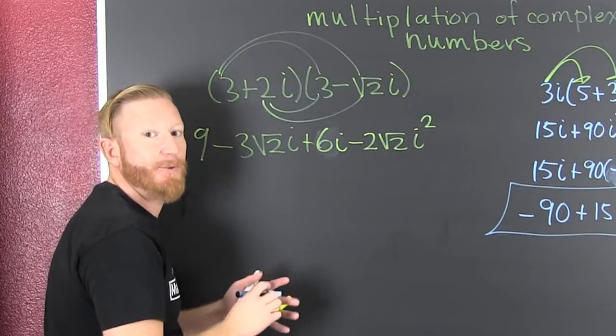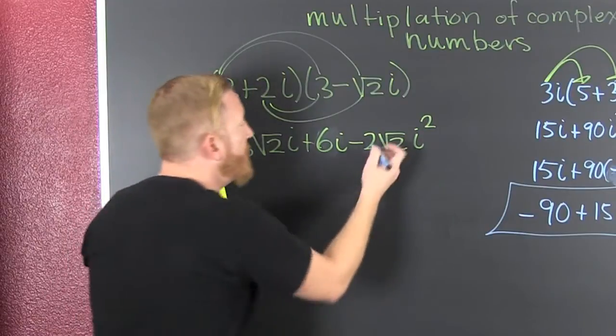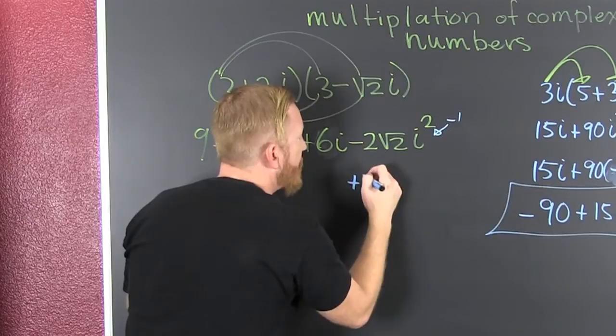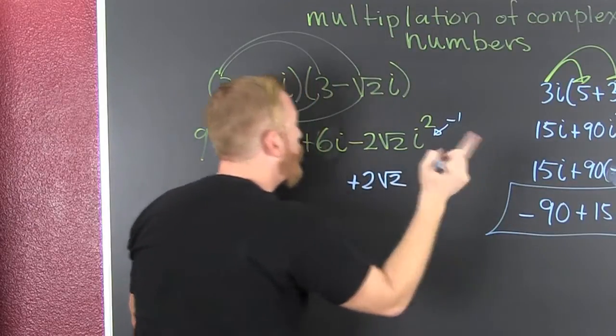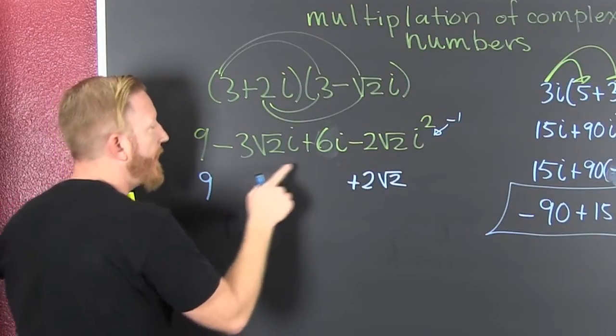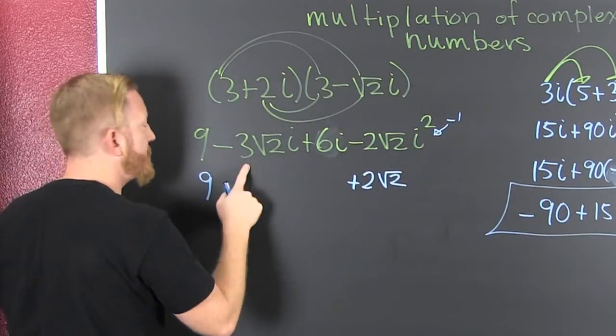That evaluates to minus one. So that's minus one. Then this is plus two root two. Oh, because minus times minus is plus. Then that's nine. All right. And then I combine these two.